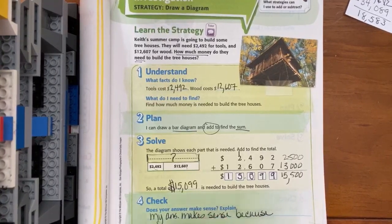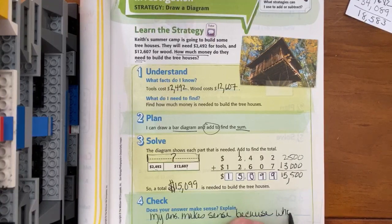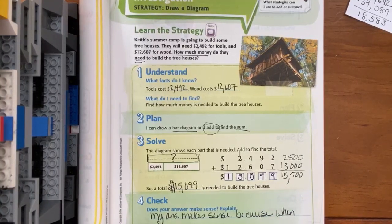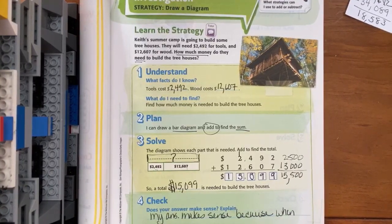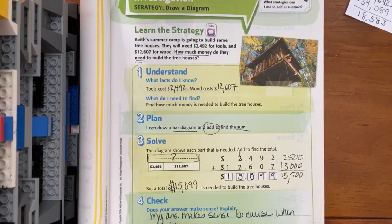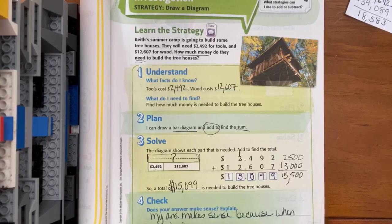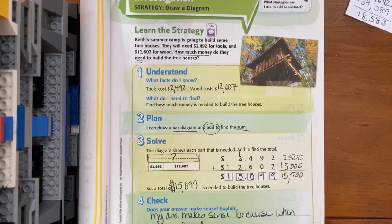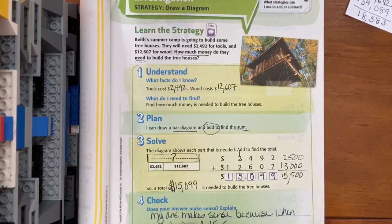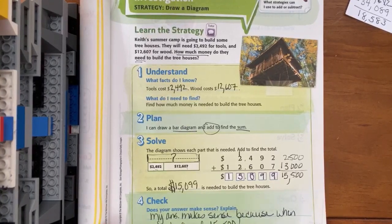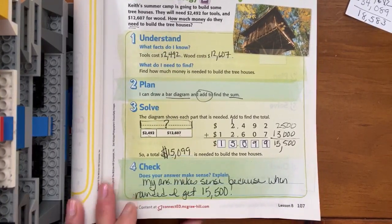Because when rounded, I get $15,500. So something along those lines so that they can understand your reasoning.